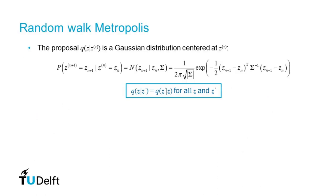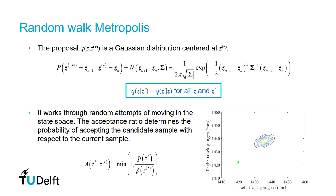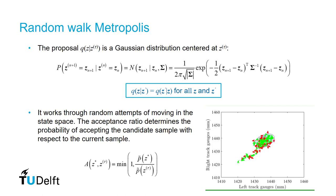Random Walk Metropolis is a basic and typical version of the Metropolis algorithm. The proposal is a Gaussian distribution centered at the current sample, which is apparently symmetric. In the animation shown here, you can see that Random Walk Metropolis works through random attempts of moving in the state space. The acceptance ratio determines the probability of accepting the candidate sample with respect to the current sample.